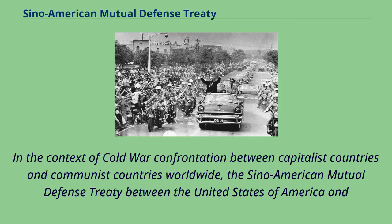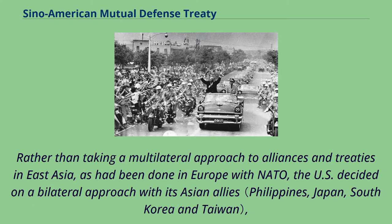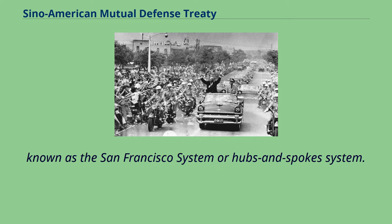In the context of Cold War confrontation between capitalist and communist countries worldwide, the Sino-American Mutual Defense Treaty was intended to secure the island of Taiwan from potential invasion by the People's Republic of China in the aftermath of the Chinese Civil War on mainland China. Rather than taking a multilateral approach to alliances in East Asia, as had been done in Europe with NATO, the U.S. decided on a bilateral approach with its Asian allies, known as the San Francisco system or hubs and spokes system.